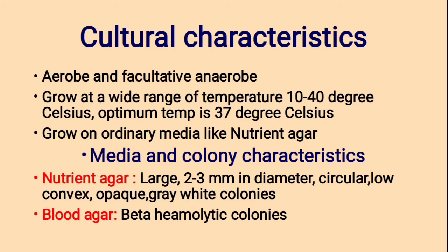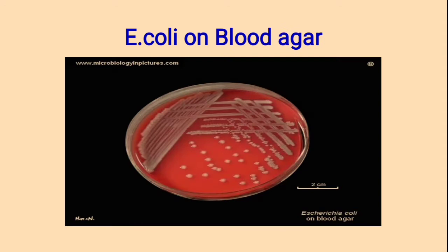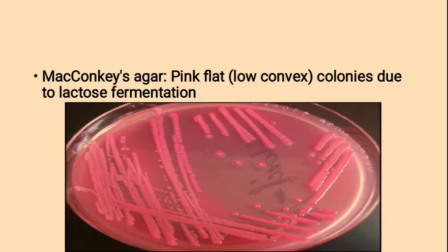On Blood agar they form beta-hemolytic colonies. On MacConkey's agar they form pink, flat or low-convex colonies due to lactose fermentation, which is one of the abilities of E. coli on MacConkey's agar.